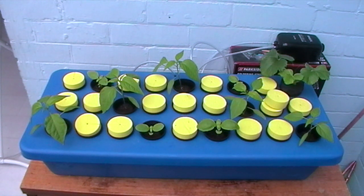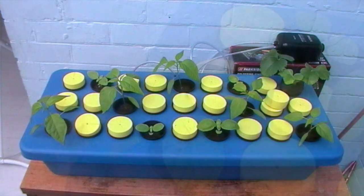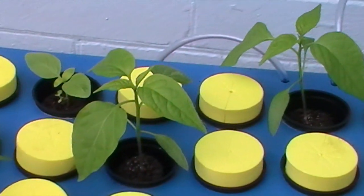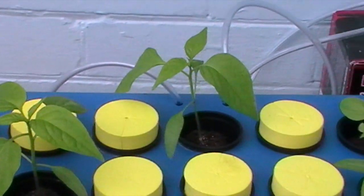As you can see they've developed significantly. The jalapenos have grown three sets of true leaves and the basil, a little slower at this point in time, have grown two sets.